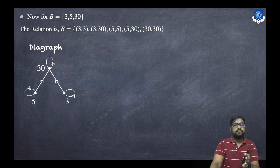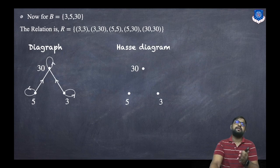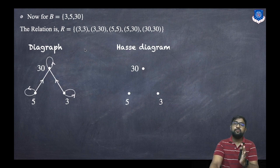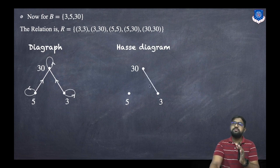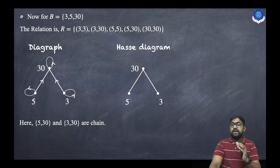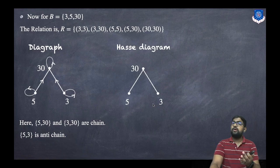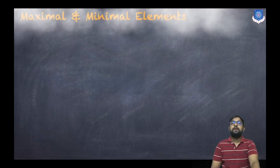For the Hasse diagram of {3, 5, 30}: place nodes 3, 5, and 30. Remove self-loops. There are no transitive edges, so the diagram simply shows edges (3,30) and (5,30). The chains here are {3, 30} and {5, 30} since those elements are related. The anti-chain is {3, 5} because 3 and 5 are not related to each other.